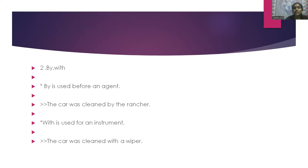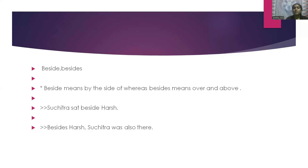By and with: by is used before an agent. For example: the car was cleaned by the rancher. With is used for an instrument. For example: the car was cleaned with a wiper. Beside and besides: beside means by the side of, whereas besides means over and above. For example: Suchitra sat beside Hush. Besides Hush, Suchitra was also there.